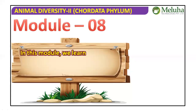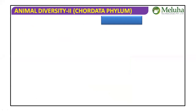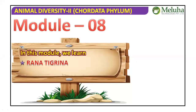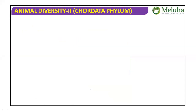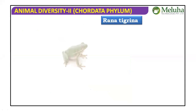Module 8: Frog. This is the second module; we have previously learned about hibernation, estivation, and camouflage. Now the scientific name of the frog is Rana tigrina.